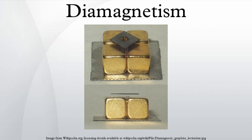Diamagnetic materials, like water or water-based materials, have a relative magnetic permeability that is less than or equal to one, and therefore a magnetic susceptibility less than or equal to zero, since susceptibility is defined as χᵥ = μᵣ − 1. This means that diamagnetic materials are repelled by magnetic fields. However, since diamagnetism is such a weak property, its effects are not observable in everyday life.